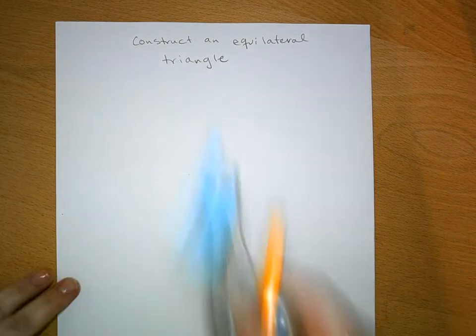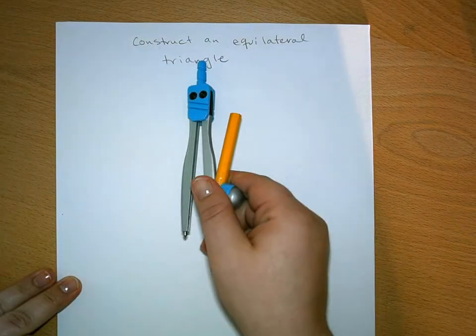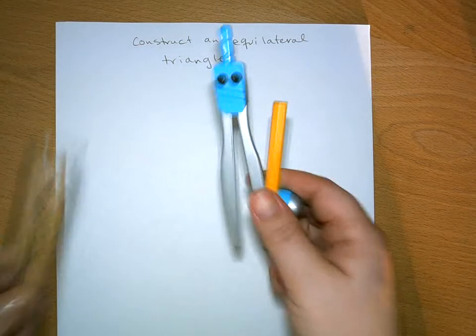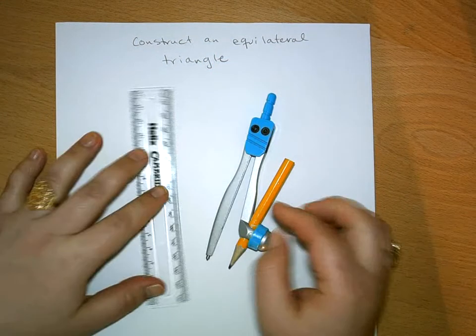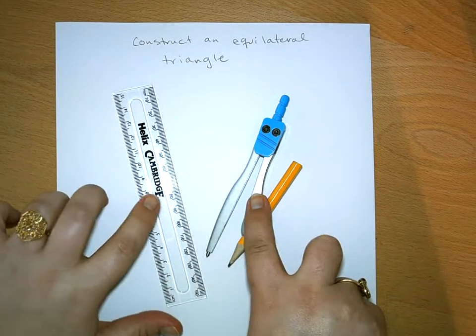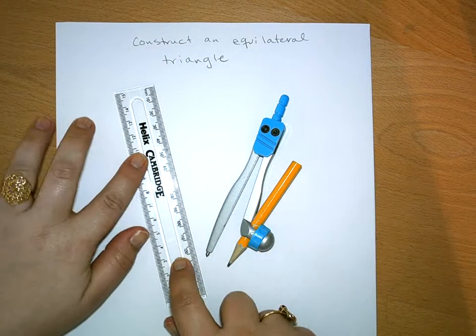So in this video I want to discuss how to construct an equilateral triangle and briefly talk about the tools that we need. Now we've used these tools in geometry. We have our compass and we have our straight edge.